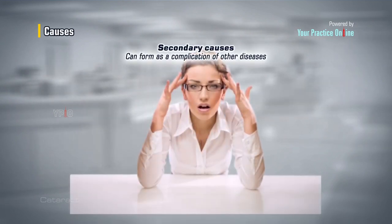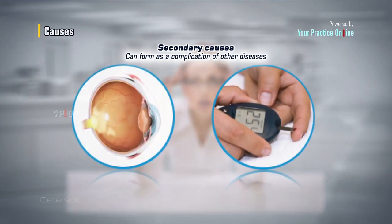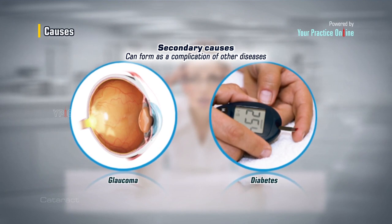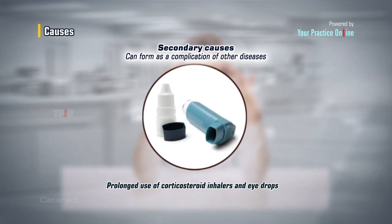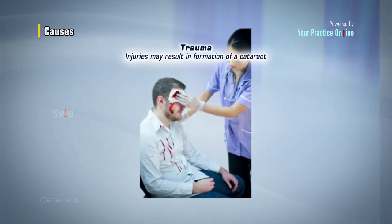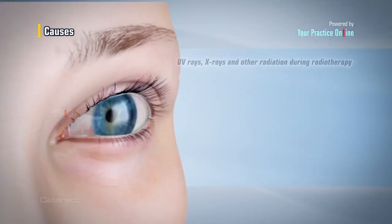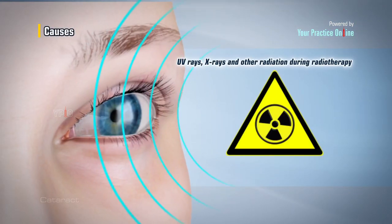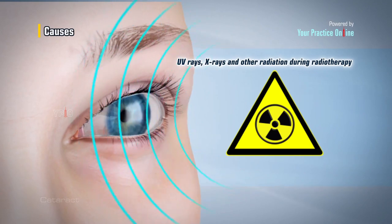Secondary causes: cataract can form as a complication of other diseases such as glaucoma and diabetes. Prolonged use of corticosteroid inhalers and eye drops increases the risk of cataract. Trauma: certain injuries may result in formation of a cataract, and cataract may also develop years after the injury. Other causes include excessive exposure of the eyes to UV rays, x-rays, and other radiation during radiotherapy.